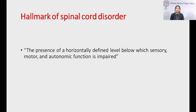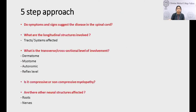Building on Dr. Prabhakar's initial talk on clinical localization — any neurological deficit showing motor weakness, sensory involvement, and autonomic involvement forms a hallmark of a spinal cord disorder. We'll discuss the five-step approach: when facing a patient with suspected myelopathy, we need to determine whether symptoms and signs suggest disease in the spinal cord.